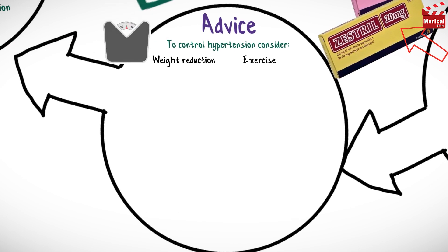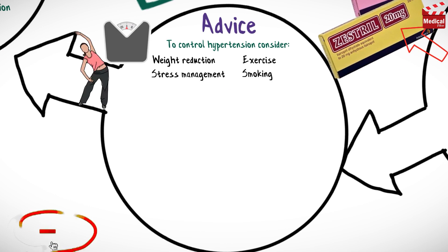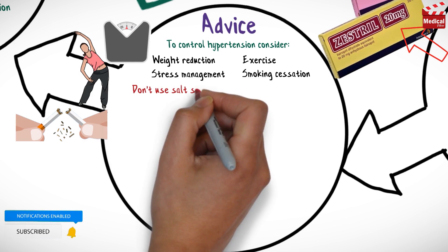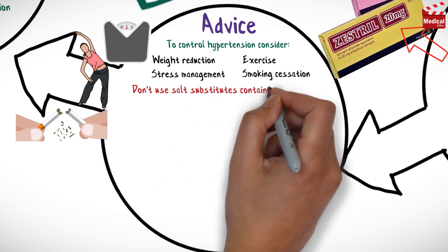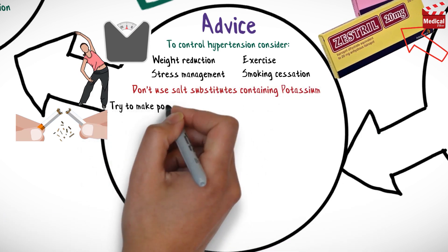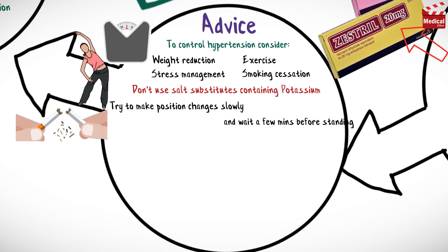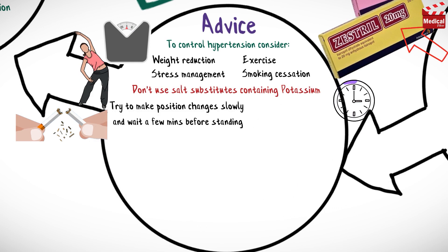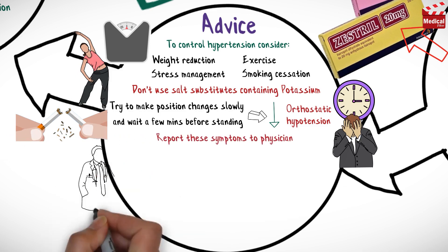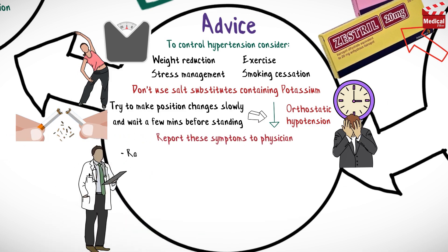Additional interventions for control of hypertension include weight reduction and exercise, stress management and smoking cessation. Do not use salt substitutes containing potassium. Try to make position changes slowly and wait a few minutes before standing to minimize orthostatic hypotension.